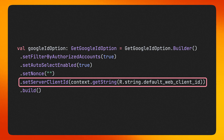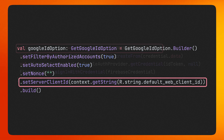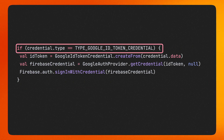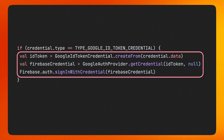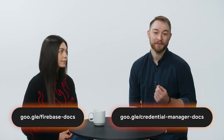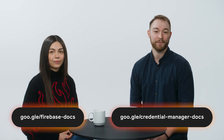Once you've configured your request and retrieved the user's credentials, you'll need to check if this is of the type Google ID token credential. If this is true, you can use this ID token to sign the user into Firebase using the Firebase Authentication API. This will allow your users to take advantage of all the other services that Firebase offers, like Cloud Storage and Firestore. If you want to learn more about Firebase Authentication, other Firebase services, and Credential Manager, we've linked the documentation pages below.